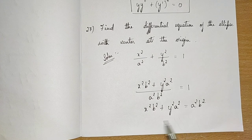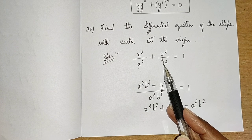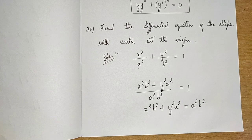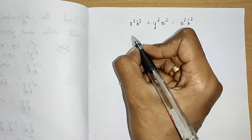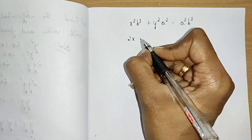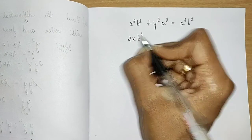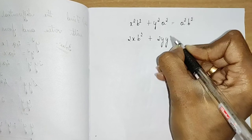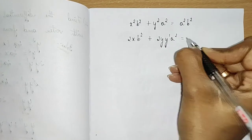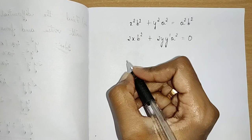We have 2 constants — a² and b² — so we differentiate twice. Differentiating: 2x·b² + 2y·y'·a² = 0, since the right-hand side a²b² is a constant whose derivative is 0.